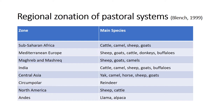We are talking about domesticated species — ruminants that through history have been domesticated by people in order to make use of them, and vice versa. For each one of them there are different genetic breeds that show different capacities and characteristics.